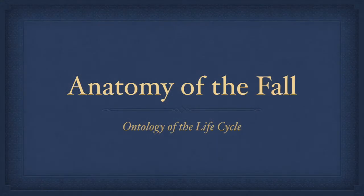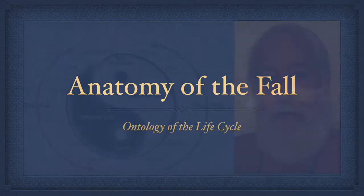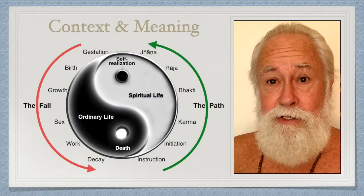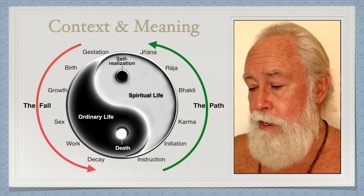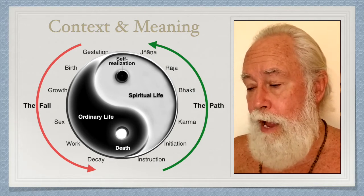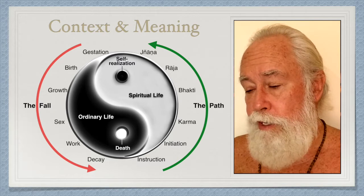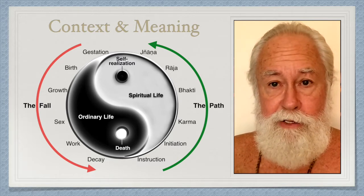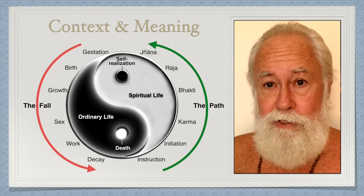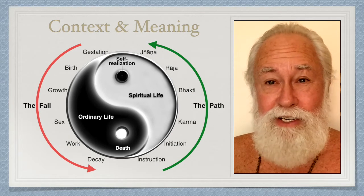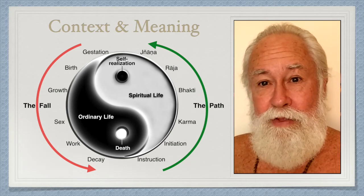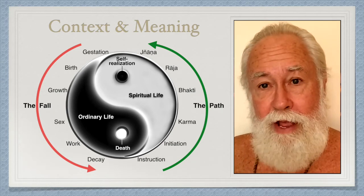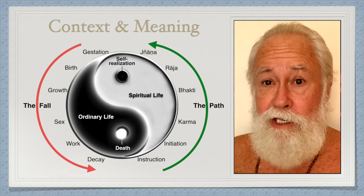Today we're going to talk about the anatomy of the fall. This is part of the ontology of the life cycle. The context and meaning of the esoteric teaching is basically the duality of the fall and the path. Ordinary life leads only to death, but spiritual life leads to enlightenment — what some call eternal life, though I would say it's the life of eternity, a subtle but significant difference. These two paths have been divided into six basic stages.